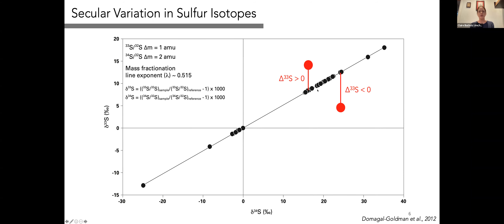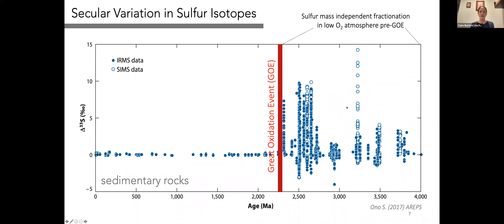Any deviation from this mass-dependent fractionation line is what I'm introducing as the cap-delta (Δ³³S) notation — it captures mass-independent fractionation. You can have either positive deviations if a sample falls above the line or negative deviations below it.